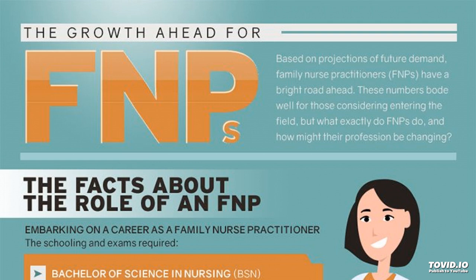Hypertension is a condition in which arterial blood pressure is chronically raised above the normal range. 95% of hypertension has no specific underlying cause, so it is called essential. Secondary causes include alcohol, obesity, pregnancy, renal diseases, endocrine disorders, certain drugs, and heart conditions. 5% of patients have hypertension associated with diseases resulting in sodium retention and peripheral vasoconstriction.